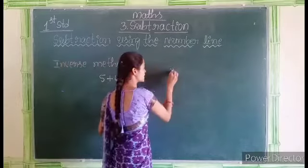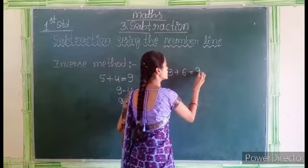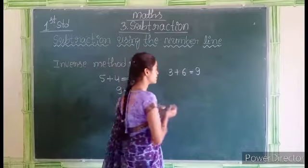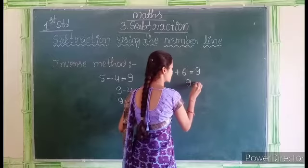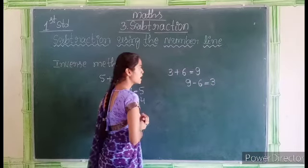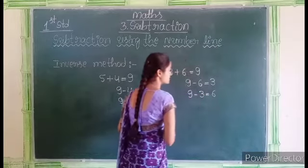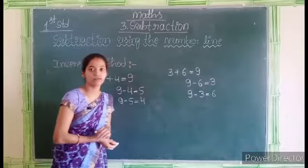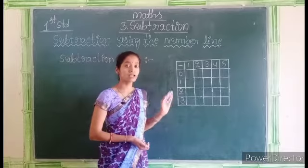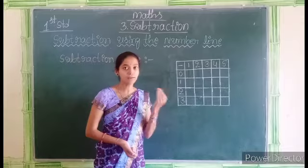This is what we call the inverse method. Let us see another example: 3 plus 6 equals 9. Now we will use the inverse method for this equation. That means 9 minus 6 gives us 3, and 9 minus 3 gives us 6. This is what we call the inverse method. This is the subtraction table — we have to subtract only a small number from a big number.